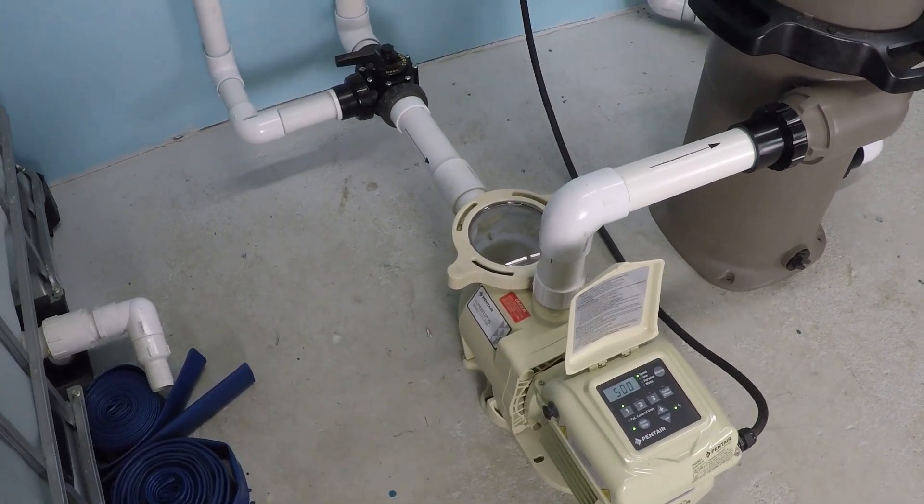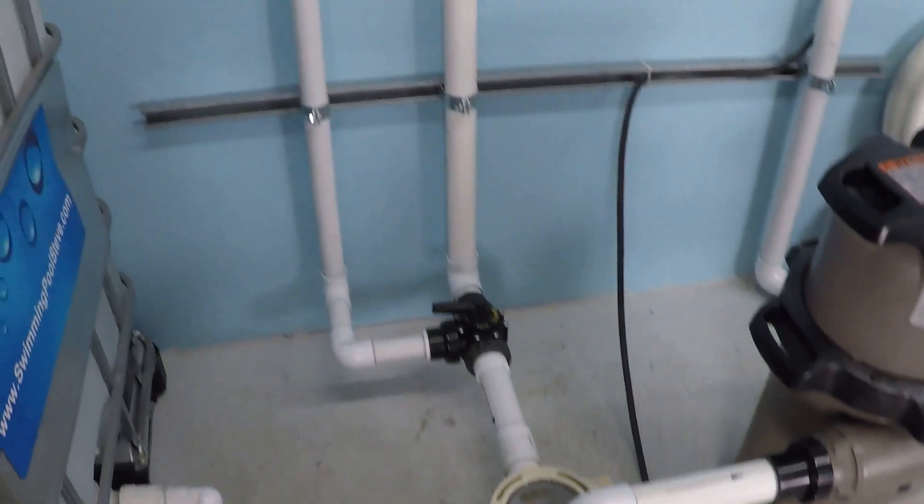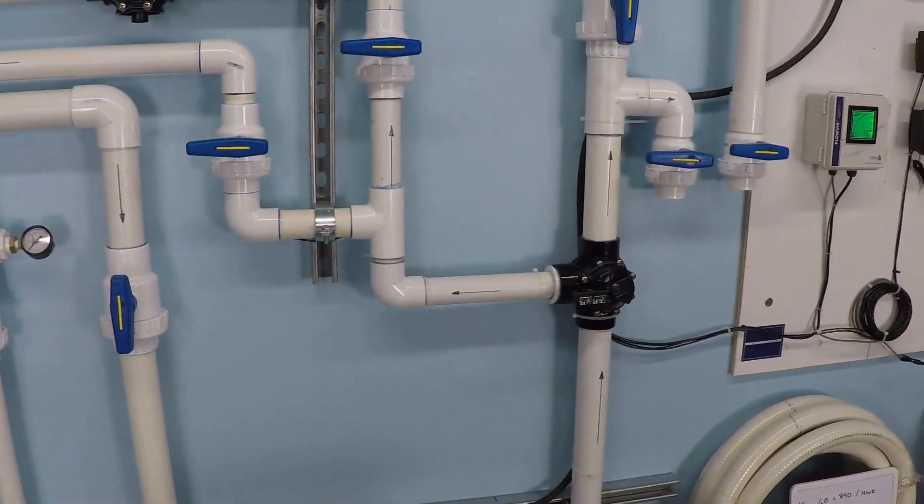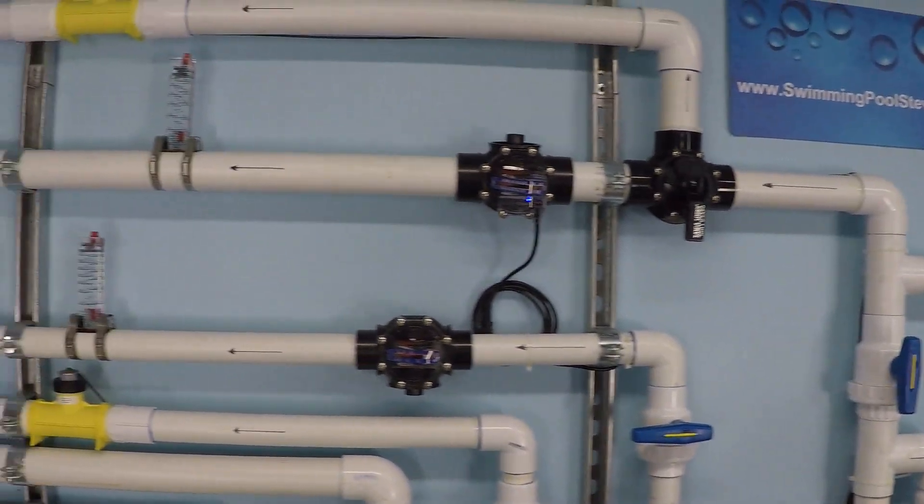Here's an example of a Pentair SuperFlow variable speed pump running. The system is currently running on a single two-inch line for the suction and a single two-inch line for the discharge side.